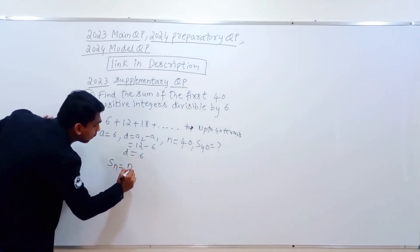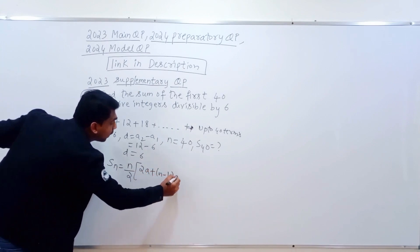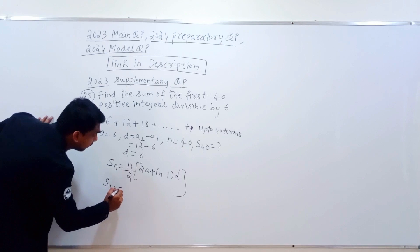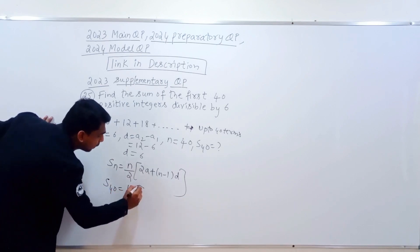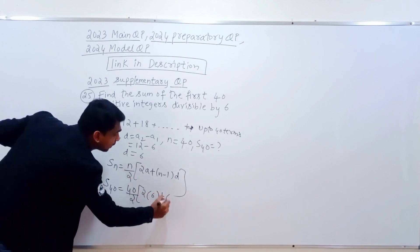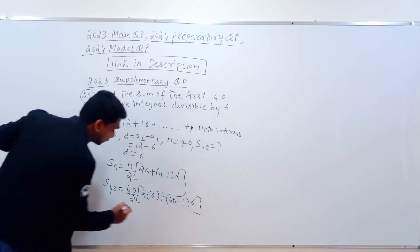Formula is Sn equals n by 2 into 2a plus n minus 1 into d. This Sn is equal to n by 2, 2 into a value 6, plus n minus 1 into d value is 6. Okay?